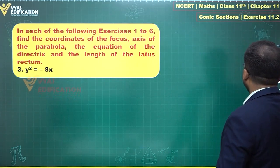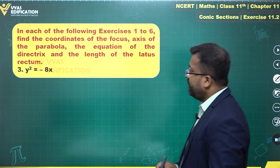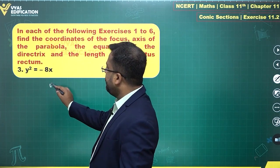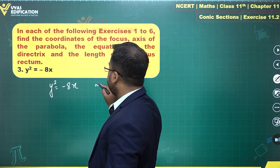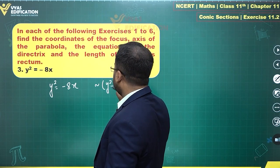The third question says we have y² = -8x, another standard form. We have y² = -8x which is similar to y² = -4ax.